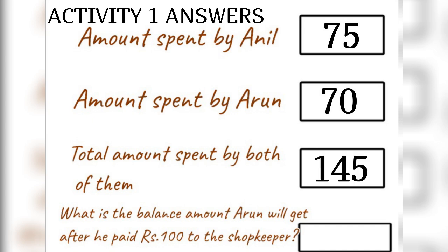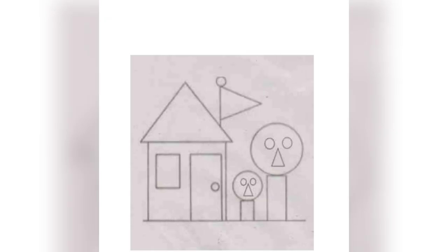What is the balance amount Arun will get after he paid Rs. 100 to the shopkeeper? We have to subtract: 100 minus 70 is equal to 30. Activity 2: Building Shapes.